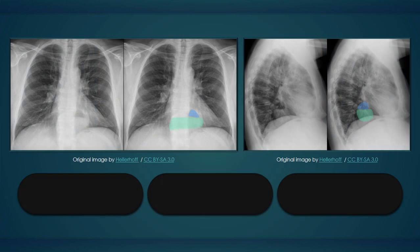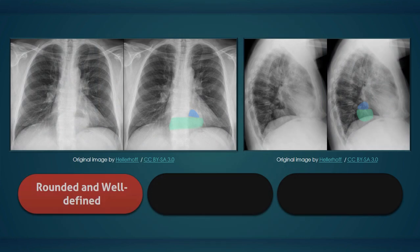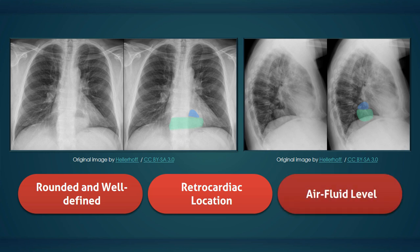To review, a hiatal hernia on an AP chest x-ray typically appears as a round retrocardiac opacity with an air-fluid level.